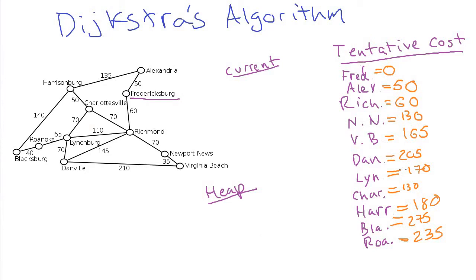We have now found not just tentative costs but the final absolute minimum costs from Fredericksburg to every city. If it was Alexandria, the answer is 50; Danville is 205; Roanoke is 235. To find the distance to any one city, we had to find all of them anyway. Dijkstra's algorithm relies on the heap to make it faster — without a heap you'd use an array and loop to find the minimum, which is O(n), whereas dequeuing from the min heap is O(log n).